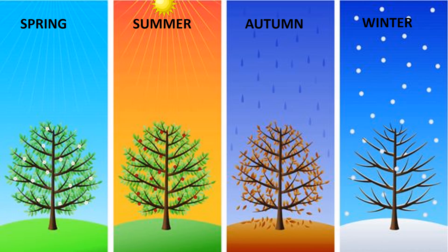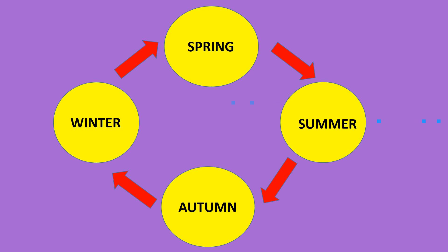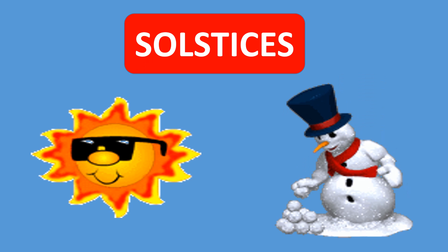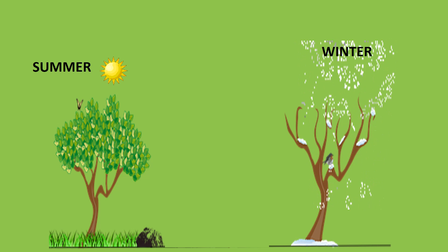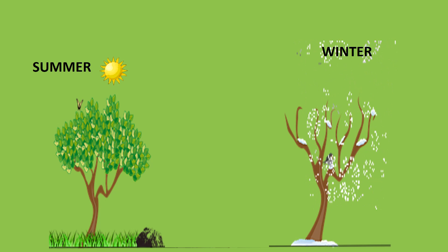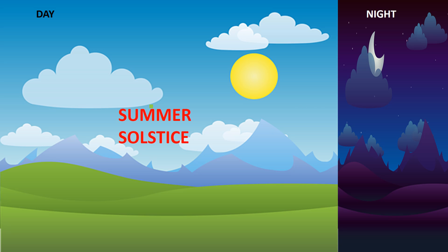In a year there are four seasons: spring, summer, autumn, and winter. Each season lasts three months and the seasons occur in a cycle. Summer and winter have a midpoint called solstices. The summer solstice is referred to as the longest day and the shortest night of the year.